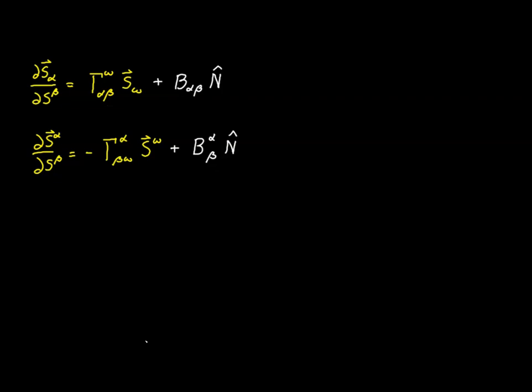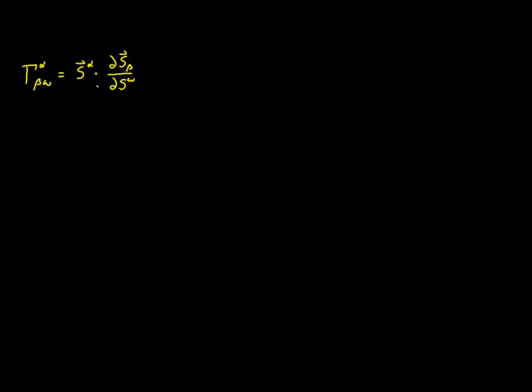With that established, let's move on to one final topic: how to evaluate Christoffel symbols for surface manifolds directly from the Christoffel symbols of the ambient coordinates using the shift tensor. We start with the Christoffel symbol definition and make substitutions: S^alpha is replaced by Z^alpha_i times Z^i, and the partial derivative with respect to S_beta is replaced using Z^j_beta times Z_j.